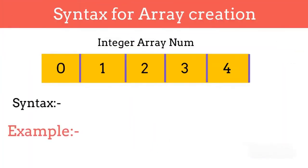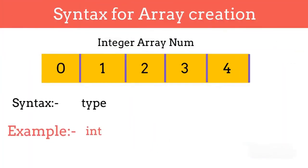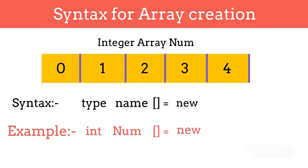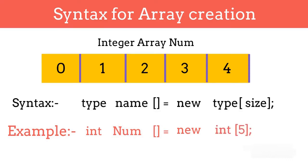Now let's see the syntax of an array. First comes the type of array — if you want to save integer numbers, the type will be int; if you want to save strings, the type will be string; same for float and double. After the type comes the name of the array — in our case, it's 'num'. Then open and close square brackets, then an equal sign, then the new keyword to initialize memory for this array, followed by the type of the array and size of the array in square brackets. You can see the syntax on your screen.